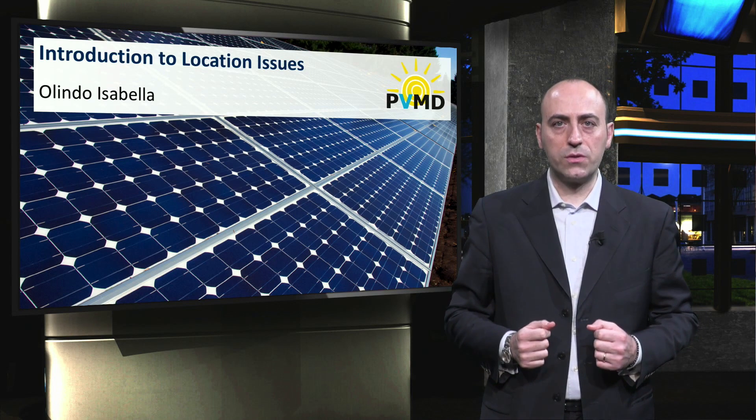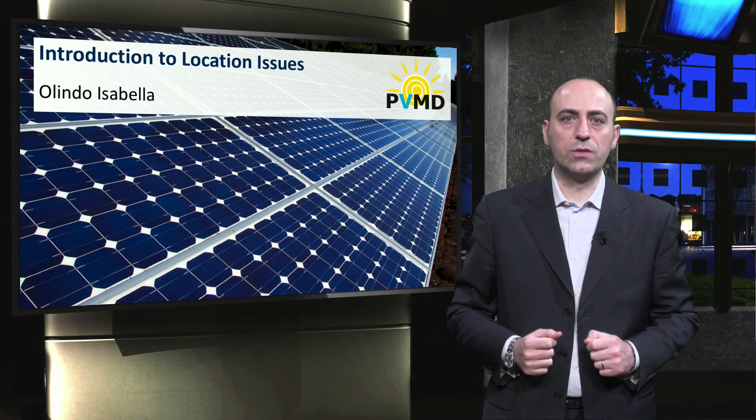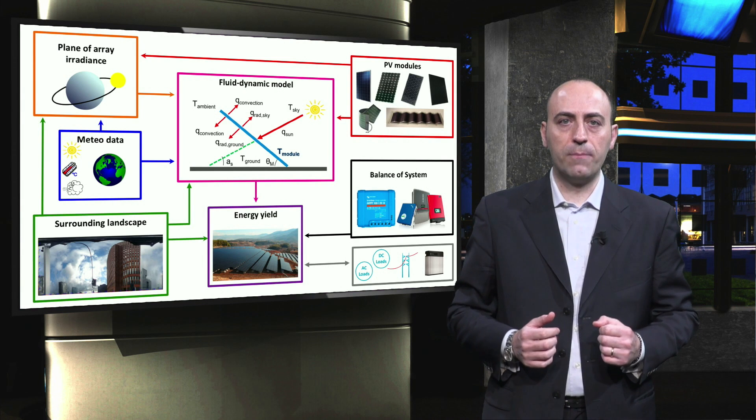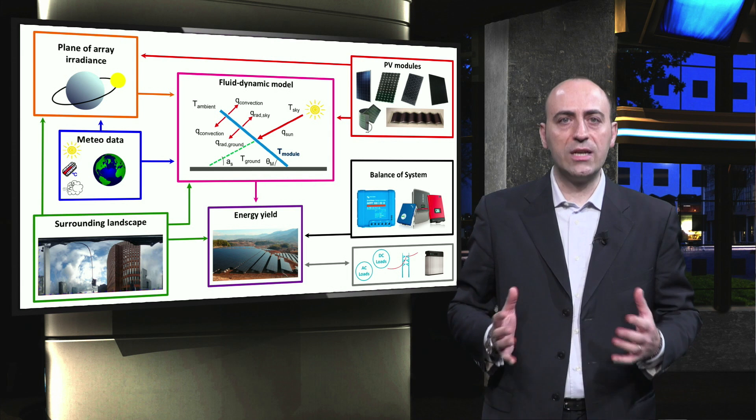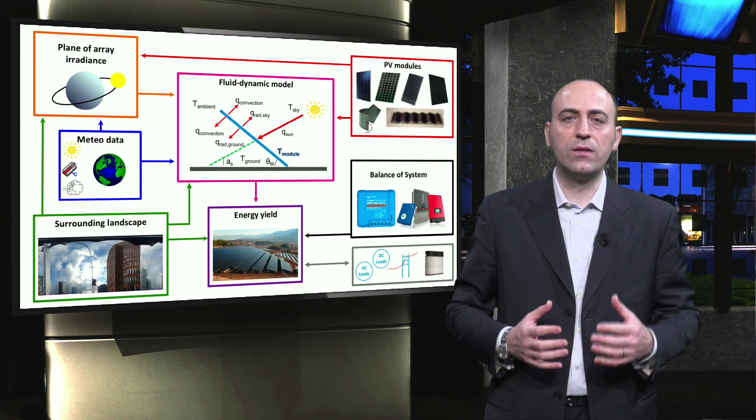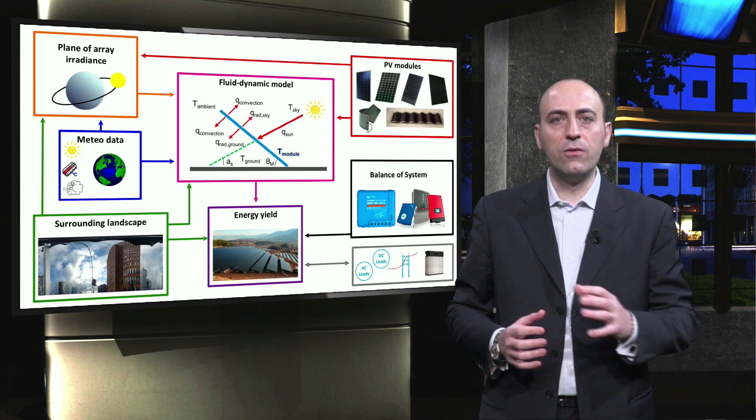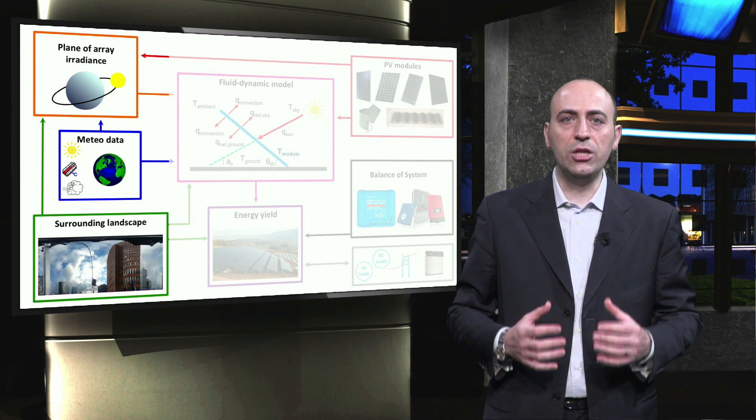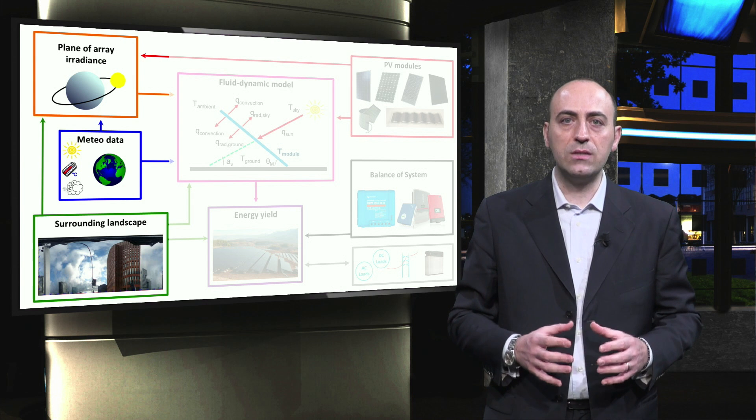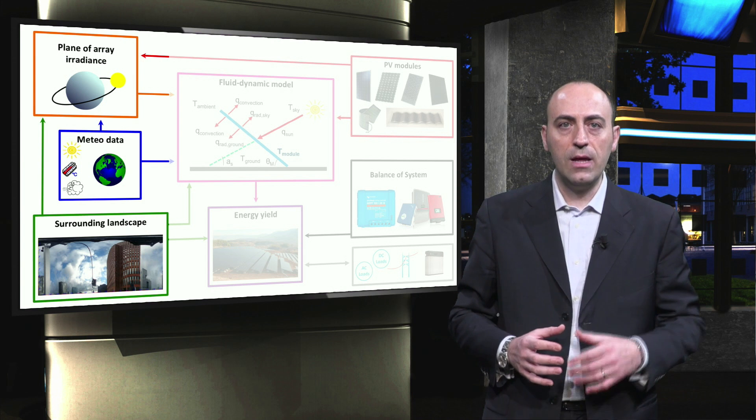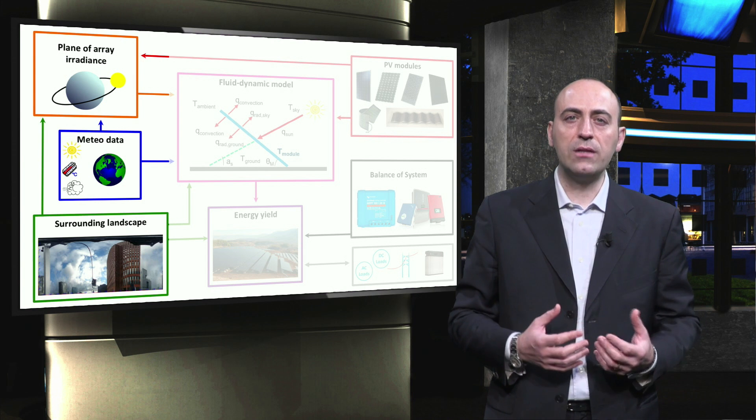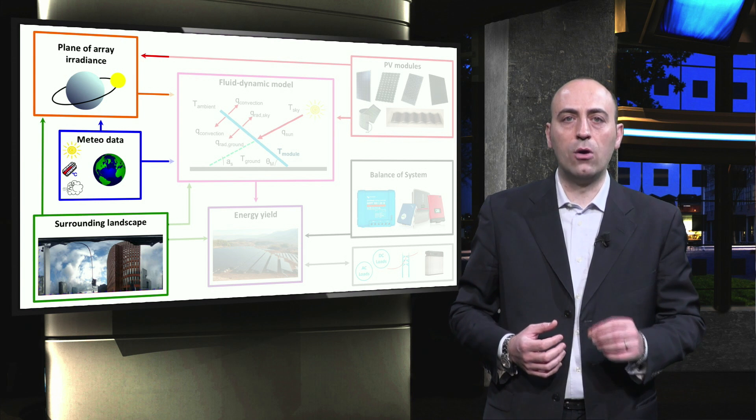Welcome to the second chapter of this course, in which we discuss location issues. Let's consider the design overview introduced in the previous week. The overview describes all aspects that are essential for an accurate design of a PV system and a related energy yield prediction. In this week we will focus on issues that are location specific, including analysis of local meteorological data, a survey of the landscape surrounding the PV system and the resulting irradiance on the so-called plane of the array.